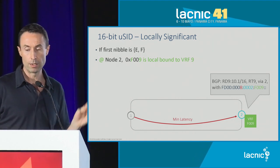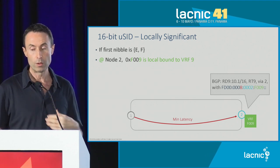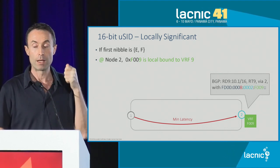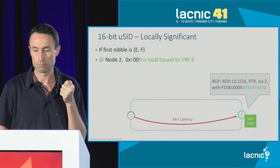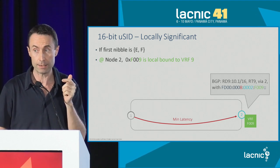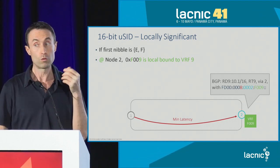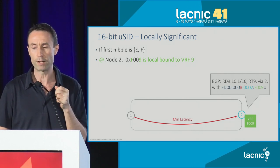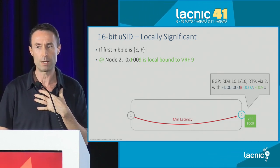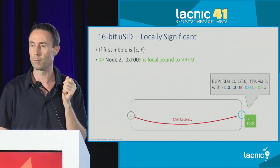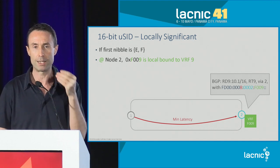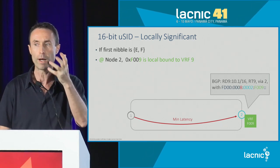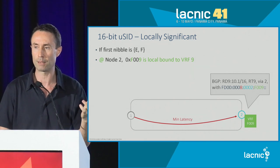Let's read it together. What node number two advertises: if you want to send packets to that client, send it with the low latency block — FD:000008 — to whom? To me, global ID 0002. To do what? When I receive it, F009 is a local ID meaning: decapsulate and forward to client number nine. You read it easily. The network program is read from left to right. The block gives you the way of routing. The next segment tells you where to go. The next segment tells you how to decapsulate. Straightforward.